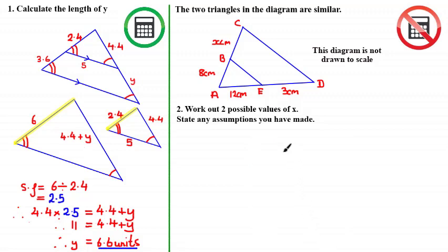Welcome back, and I hope you had a decent attempt at that question. In this question we've been told that two triangles are similar and asked to work out two possible values of X. Since the shapes are similar, we know we can find a scale factor to scale the lengths of one side to get another similar side. However, the problem is that we can't say for sure which sides are similar.